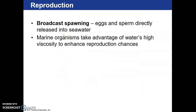As far as reproduction, one adaptation many creatures have taken on is broadcast spawning, where eggs and sperm are directly released into the seawater rather than eggs being laid in a particular spot. Marine organisms take advantage of this because the high viscosity allows those eggs to float, and sperm can directly interact with the eggs in the water, enhancing reproduction chances. Many species are broadcast spawners.